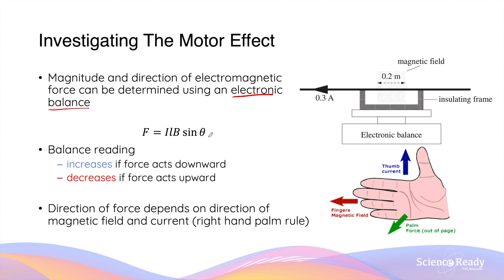By way of review, the force produced by the motor effect is given by F = ILB sinθ, where I is the current passing through the conductor, L is the length of the conductor, and B is the strength of the magnetic field.